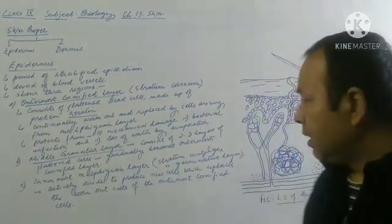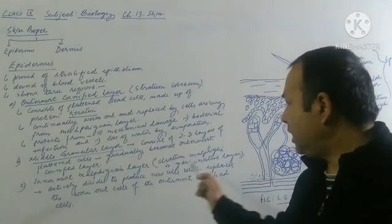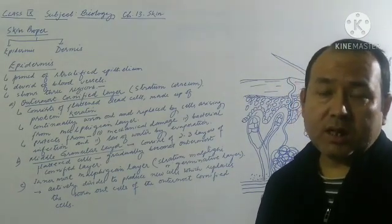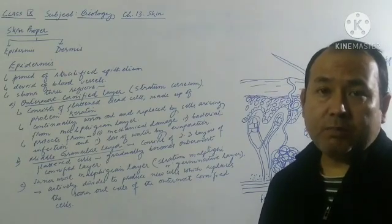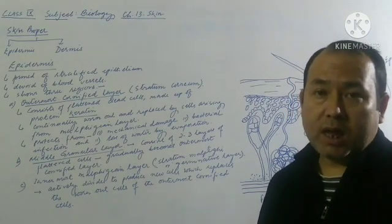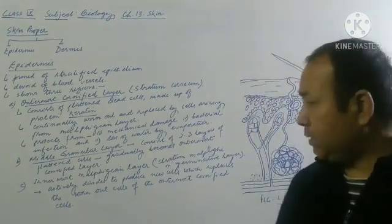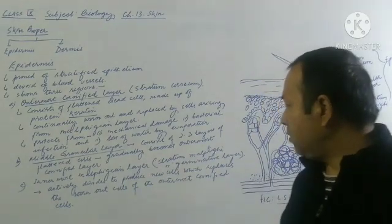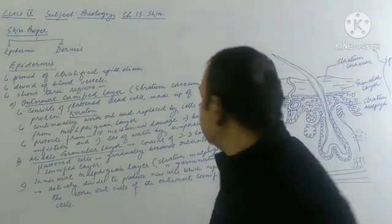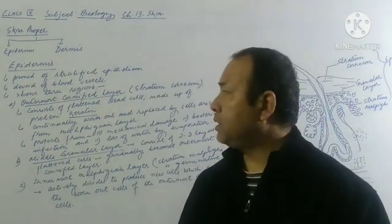Then comes the innermost layer, the malpighian layer, also called stratum malpighii or the germinative layer. It is called the germinative layer because the cells in this region actively divide to produce new cells, which replace the worn-out cells of the outermost cornified layer. This completes the description of the three different layers of the epidermis.